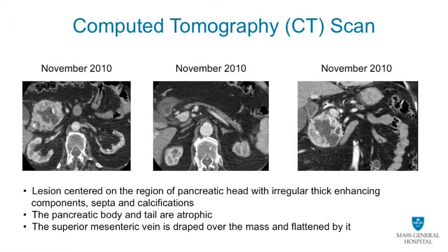The outside hospital CT scan revealed a large mass of about nine centimeters in the pancreatic head. The mass was irregular with thick enhancing components as well as septa and calcifications. The superior mesenteric vein appeared to drape over the mass, and the body and tail of the gland were atrophic.